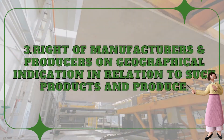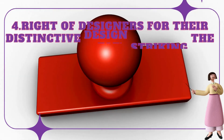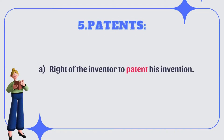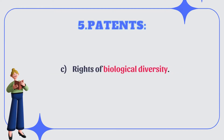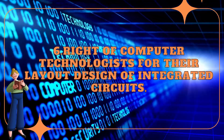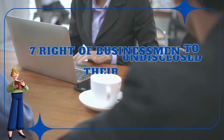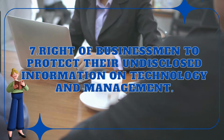Number three, right of manufacturers and producers on geographical indication in relation to such products. Number four, right of designers for their distinctive design. Number five, patents — right of the inventor to patent his invention, rights of plant breeders and farmers, rights of biological diversity. Number six, right of computer technologists for their layout design of integrated circuits. Number seven, right of businessmen to protect their undisclosed information on technology and management.